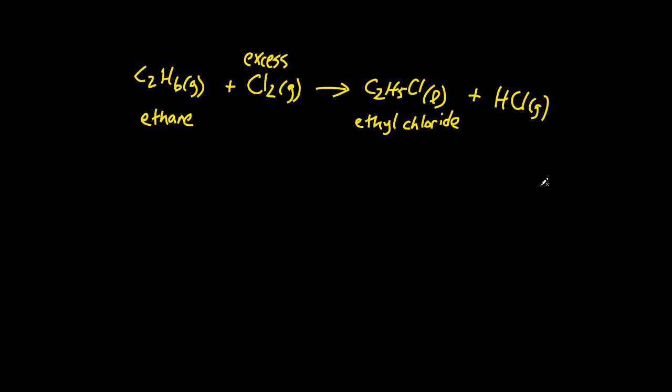And you know that there is actually 5.5 grams of ethyl chloride produced and 4.7 grams of ethane put into the reaction.